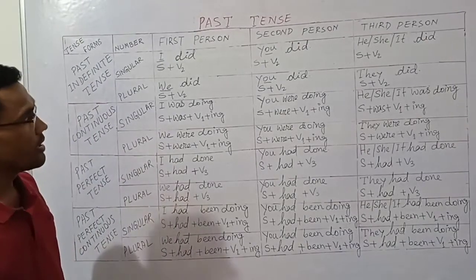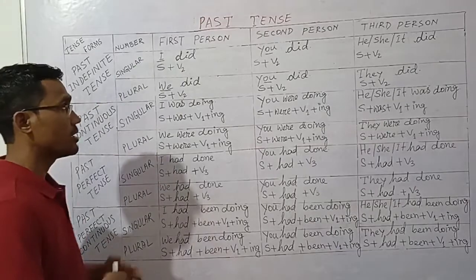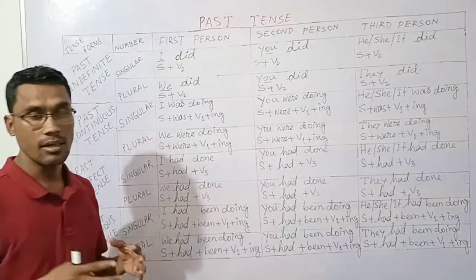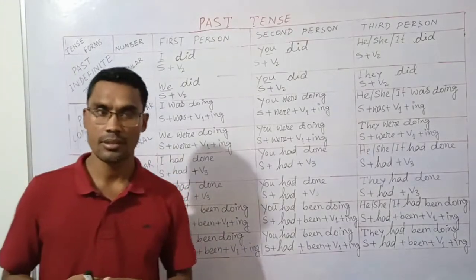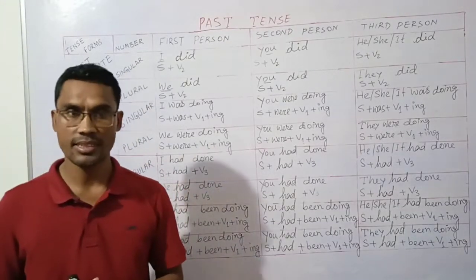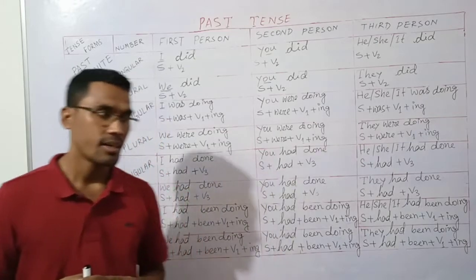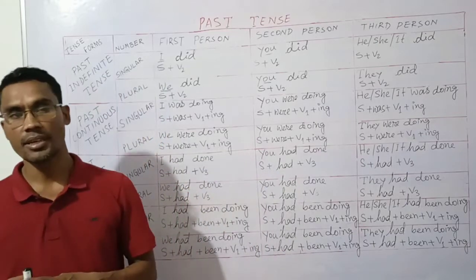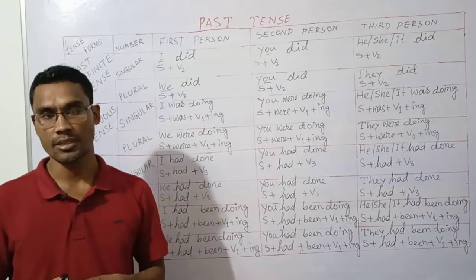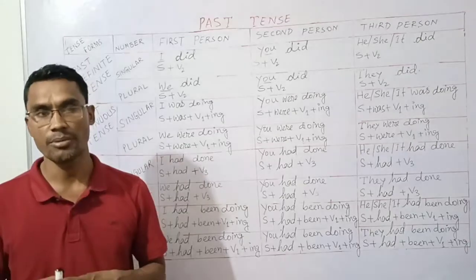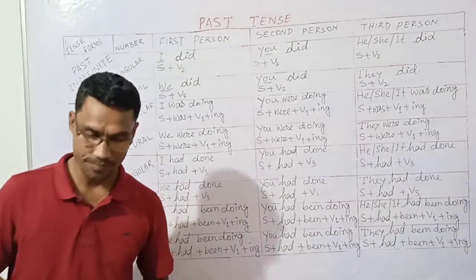To summarize all four structures: past indefinite — subject plus verb second form plus object; past continuous — subject plus 'was/were' plus verb plus '-ing' plus object; past perfect — subject plus 'had' plus verb third form plus object; past perfect continuous — subject plus 'had been' plus verb plus '-ing' plus object. Next we will move on to future tenses.